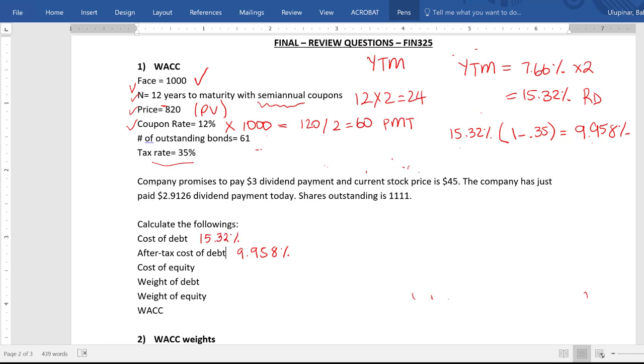The first one is called cost of debt or before tax cost of debt. And let's look at the cost of equity information. So for that part, we have the dividend growth model. We are going to solve for required return to get our cost of equity. So I need to know my dividend payment one.